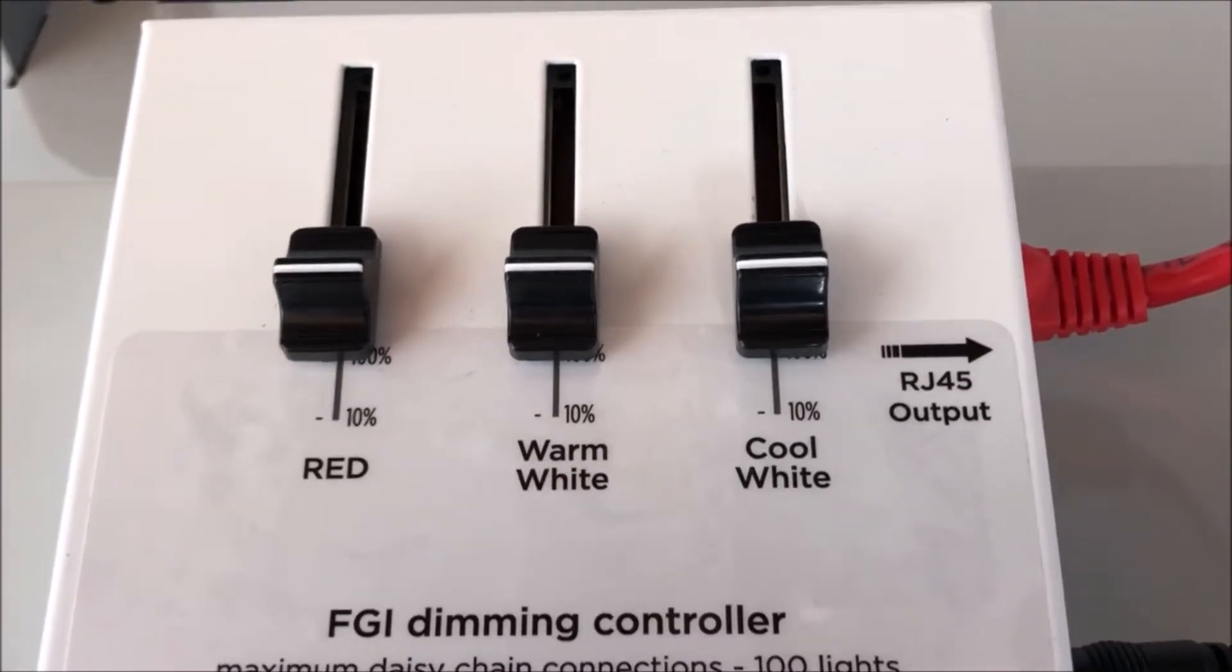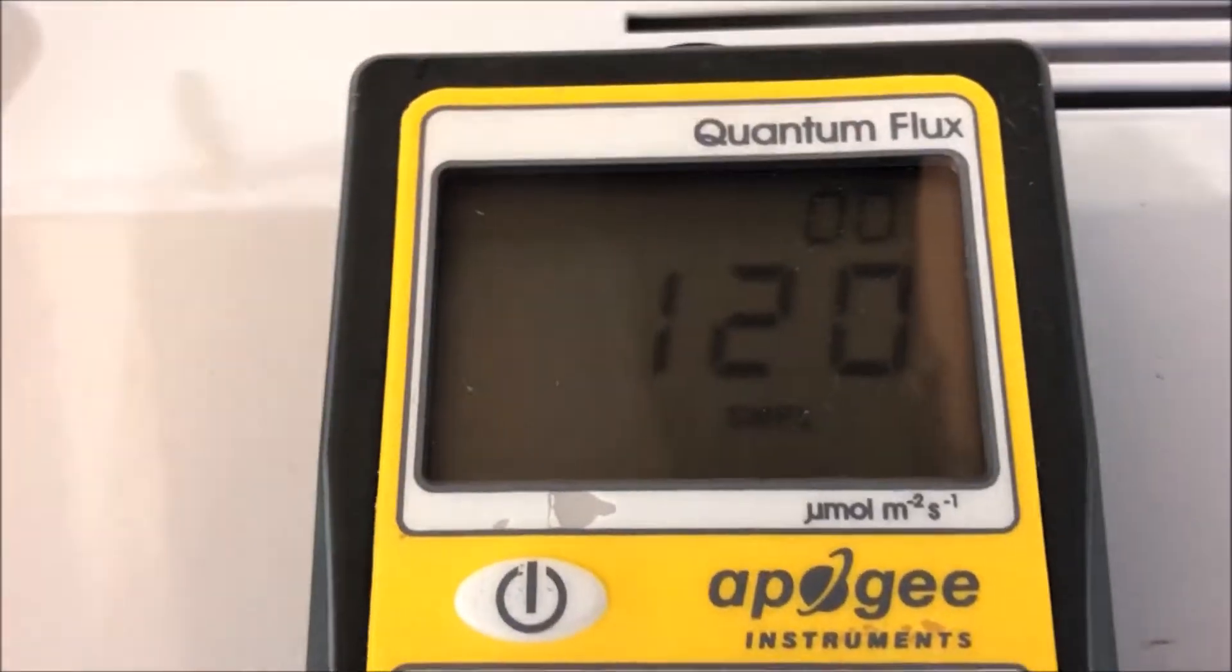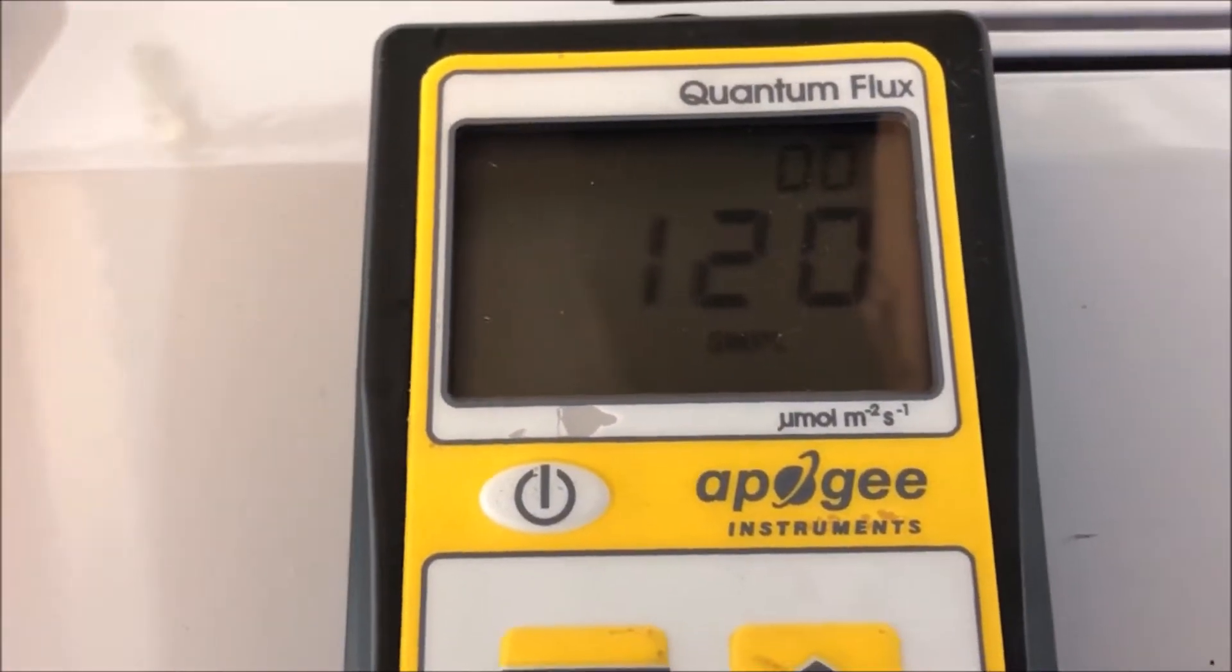Now I've dimmed the light to 10%. We'll come over and take a look at the PAR meter, and you can see that it's down at 120 micromoles, which is actually about right for cloning. So you have a lot of control over light intensity with this light.